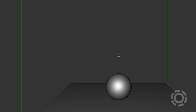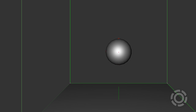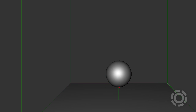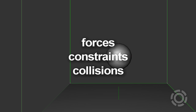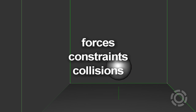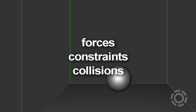Now we've seen three important ways to move objects in our physical world: there's the world's gravity force, there's the position constraints of the world box, and there's bouncing from collisions with other bodies. In our next video, we'll look at these more closely.